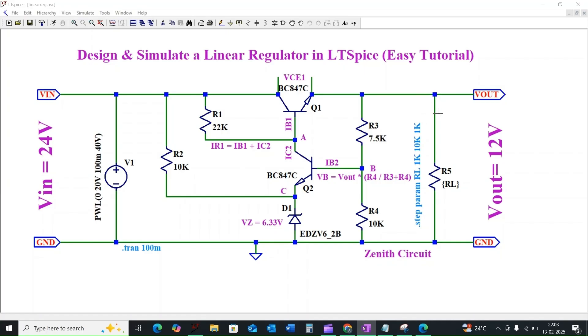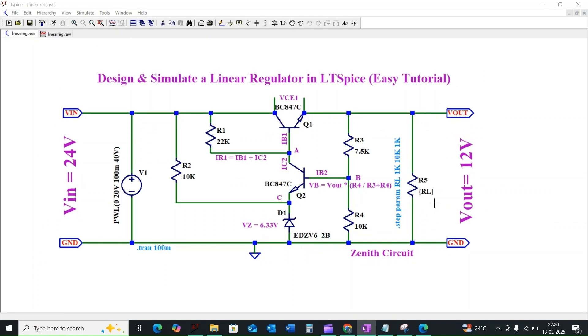The second scenario: if the output voltage attempts to fall below 12 volt, as we discussed earlier, the current IB1 will increase, leading to lower the current IC2. Similarly it will decrease the collector to emitter voltage of transistor Q1, allowing the output voltage to rise back towards the desired value.